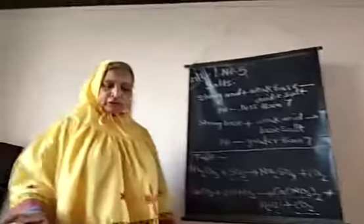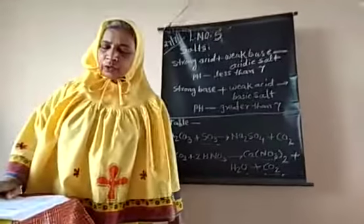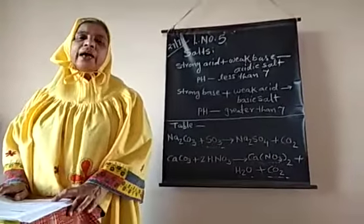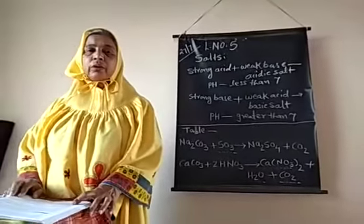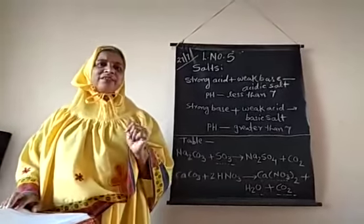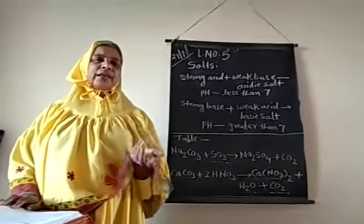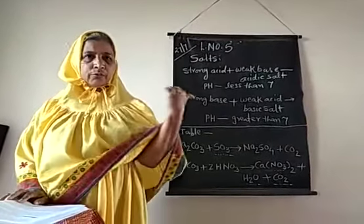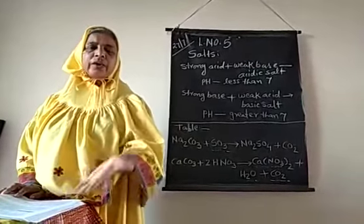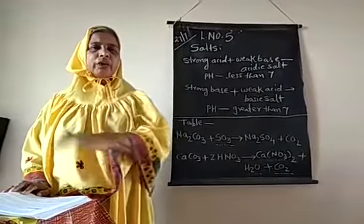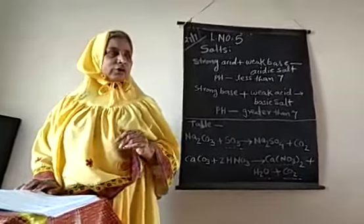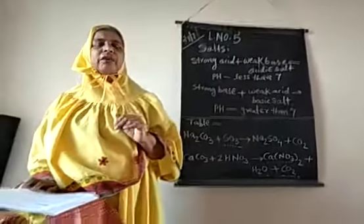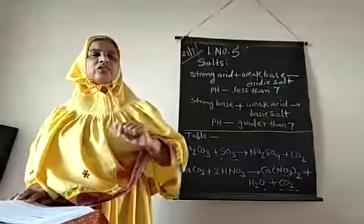Today we are going to start salts. There are three types of salts: acidic, basic, and neutral salts. Salts are formed when there is a reaction between acid and base. Salt and water are formed when different types of chemicals react together, but depending upon their reactivity, the salts are divided into these three groups.